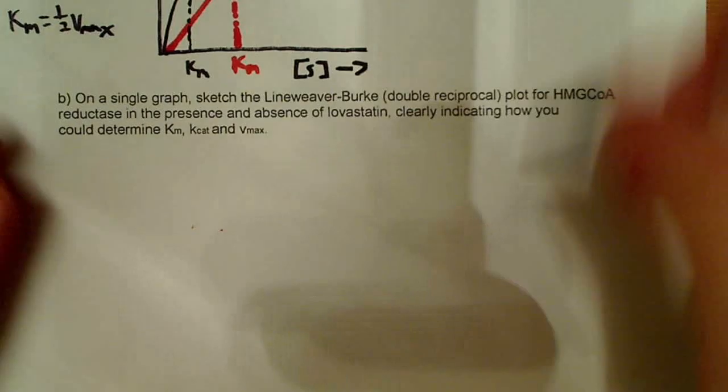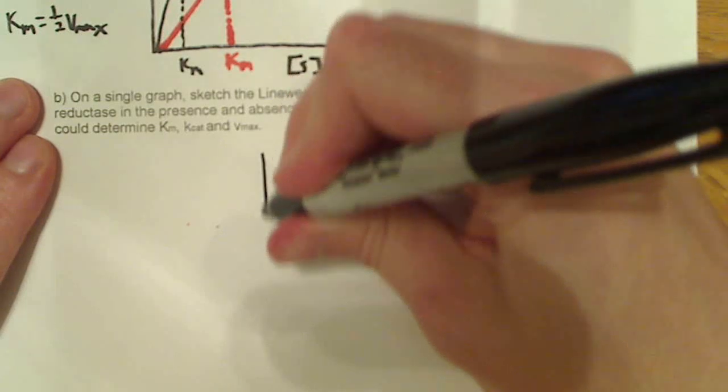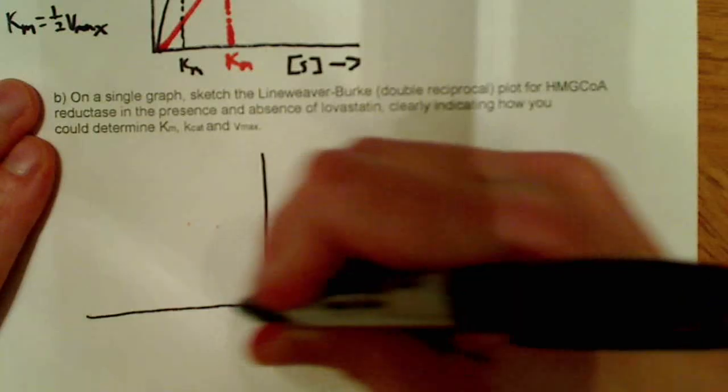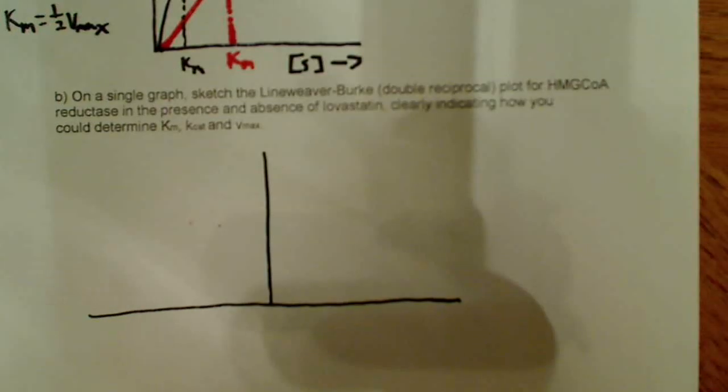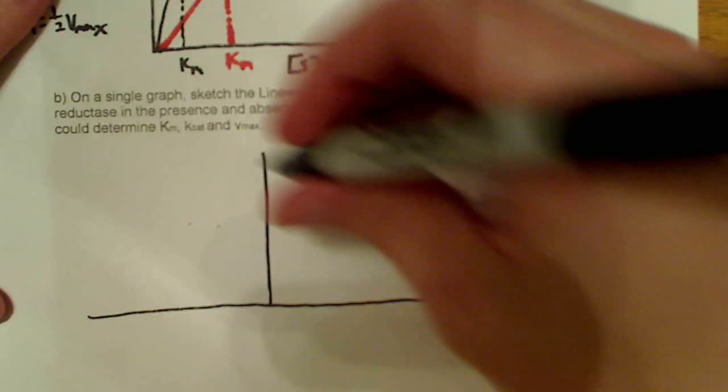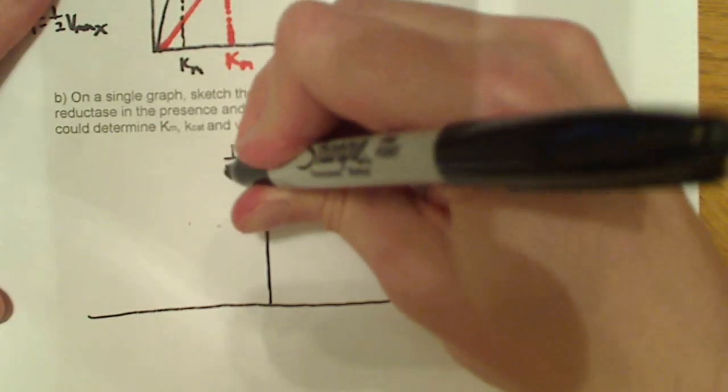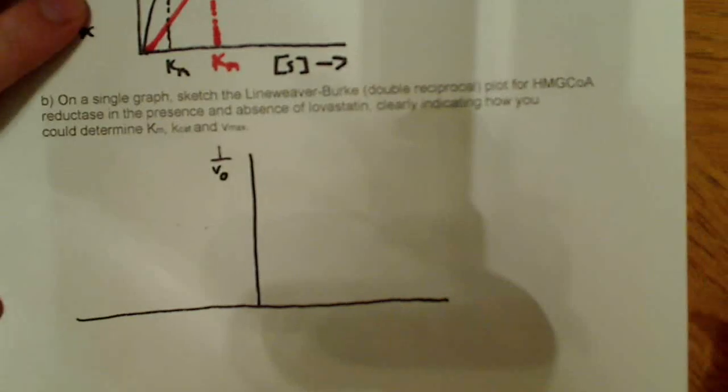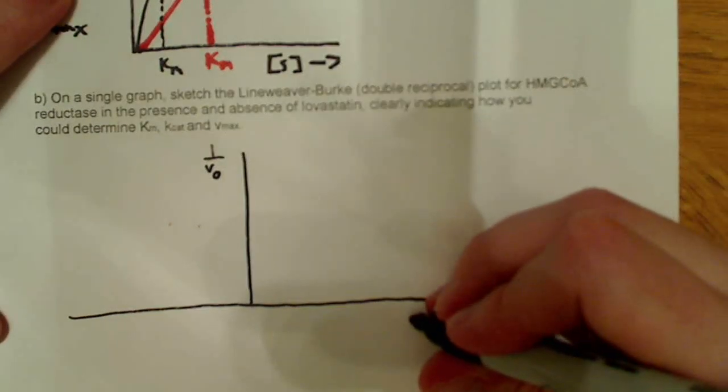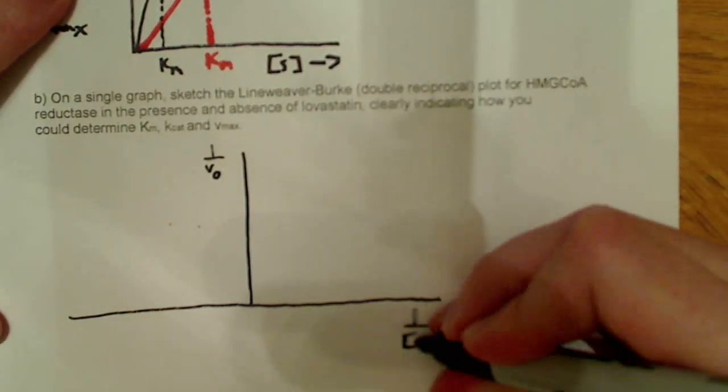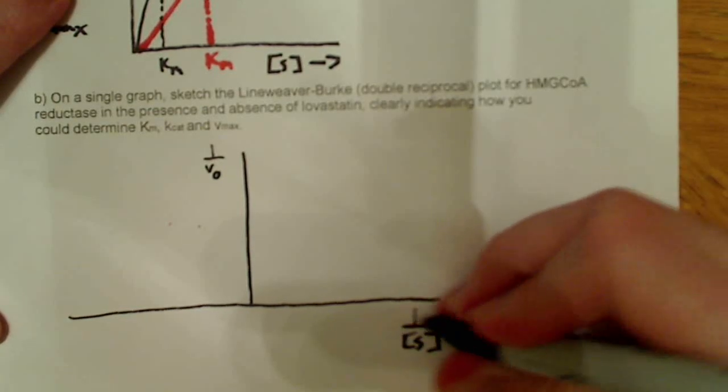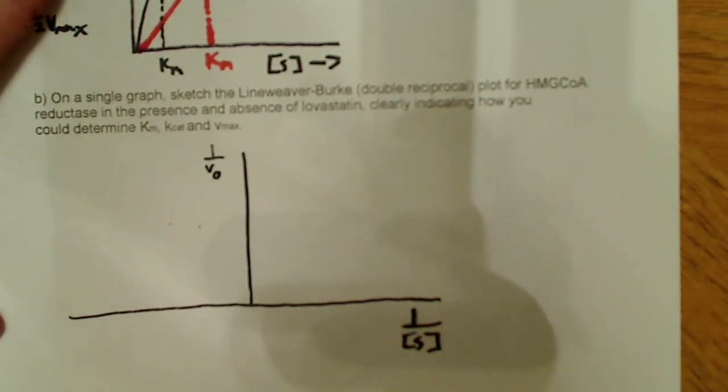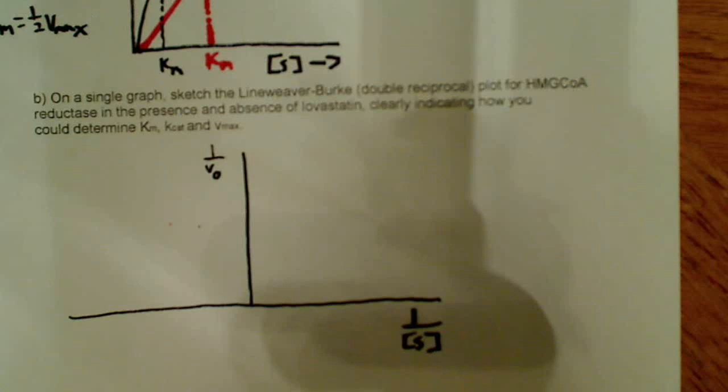Now, they just want us to draw the linear version of the graph, which is known as a Lineweaver-Burk plot, and recall the Y-axis is 1 over V. And this X-axis over here is 1 over S. So, 1 over S. Recall those things. It's important to remember.